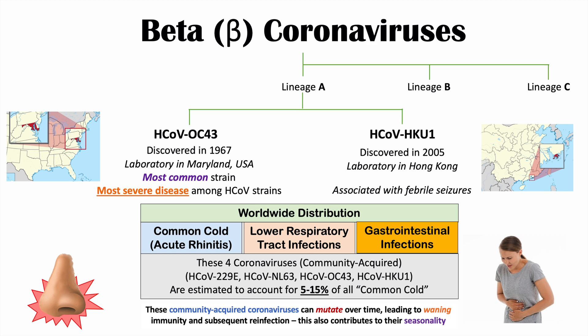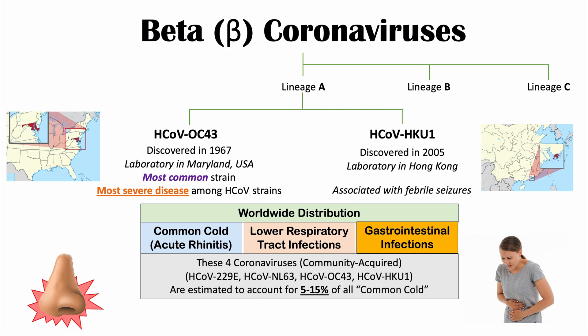These four HCOV coronaviruses are considered the community-acquired coronaviruses. They are all over the world, fluctuate throughout the year, and have a seasonality. They are estimated to cause about 5 to 15% of all common colds or acute rhinitis, making them significant pathogens in humans. They often occur as co-pathogens, meaning they occur alongside another virus — most often respiratory syncytial virus or RSV, which also causes many lower respiratory tract infections.